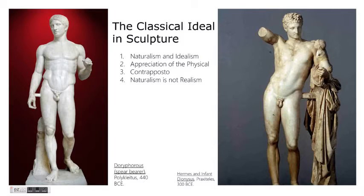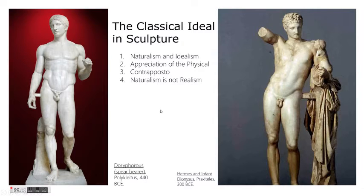As you can see from Greek architecture, there's an interest in systems — studying how we do something and making sure we do it in a way that is as ideal as possible, aiming for a restrained sense of perfection. You can see the same thing in sculpture: there's a balance between naturalism and idealism.